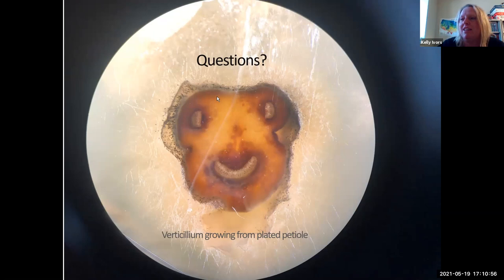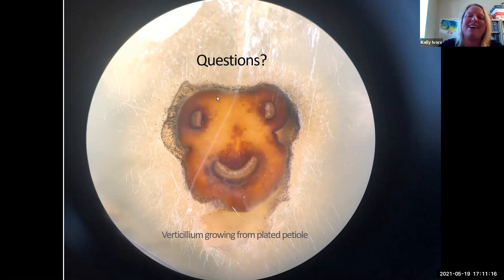That is a strawberry petiole — I did not do any augmentation of the picture. It's actually the vascular system that is smiling at us, and that petiole has Verticillium — a Verticillium 'hair' and a Verticillium 'beard.' You can look at that while you ask questions.